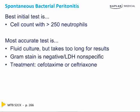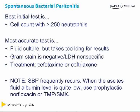Treatment is always cefotaxime or ceftriaxone. Remember, SBP frequently recurs. When there is ascites and the fluid albumin is low, you must consider prophylactic norfloxacin or Bactrim.